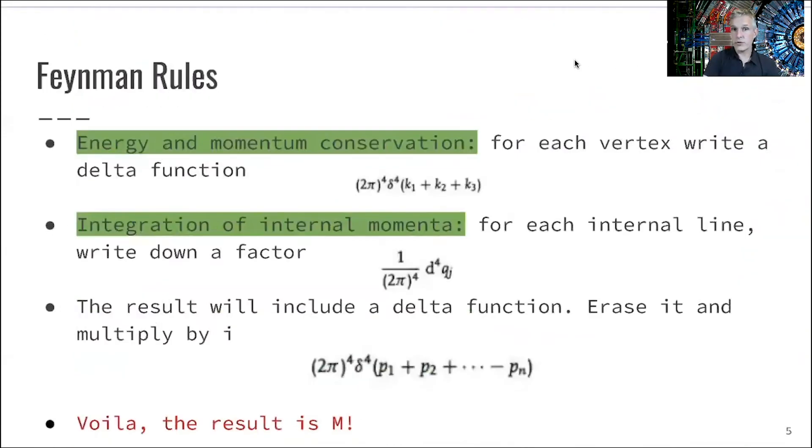You want to make sure that energy and momentum is conserved. So for each vertex, you write down a delta function with the conditions. So this is for this three vertex where momentum of the first one plus the second plus the third is equal to zero. Only then the value of the delta function is one. Remember, there's a minus sign somewhere, most likely here for this K1 value.